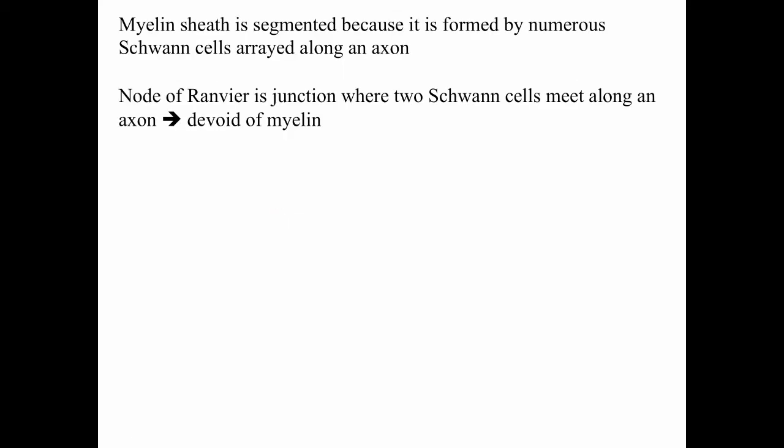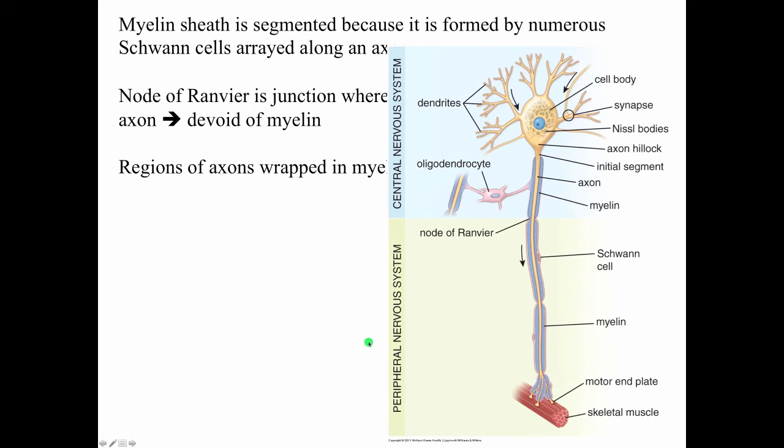The myelin sheath is segmented because it is formed by numerous Schwann cells arrayed along the length of an axon. The node of Ranvier is a junction where two Schwann cells meet along an axon, and at that junction the axon is actually devoid of myelin. The regions of the axon wrapped within myelin are called the internodal segments.